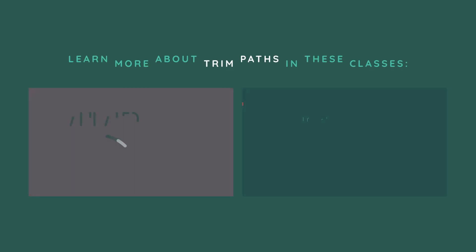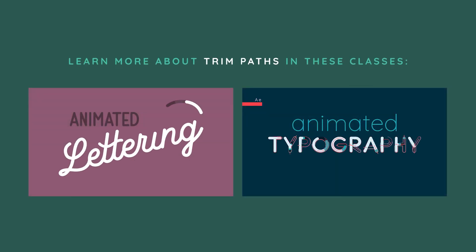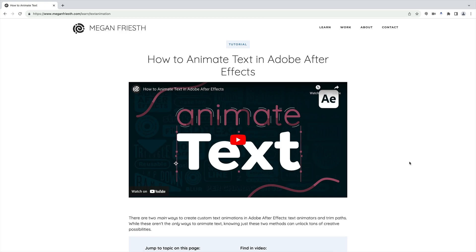Obviously a lot of logos have text. Trim Paths can be a great way to animate text, but there are other options too. Check out this video and guide to learn more about animating text.